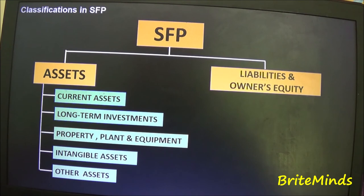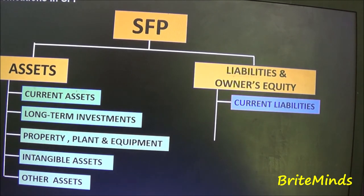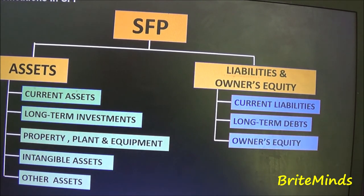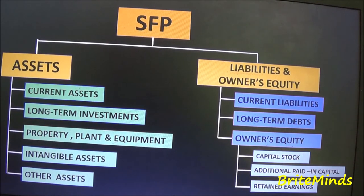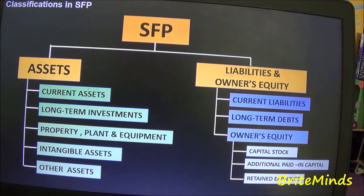Under liabilities and owner's equity, the accounts include current liabilities, long-term debts, and owner's equity. Under owner's equity are capital stock or owner's investment, additional paid-in capital, and retained earnings or the accumulated net income of the company. This is how the Statement of Financial Position of a company looks, and this will be further discussed in another video.